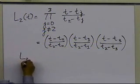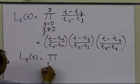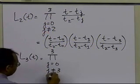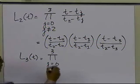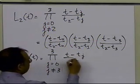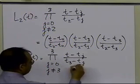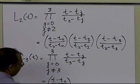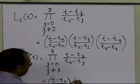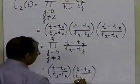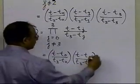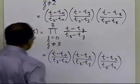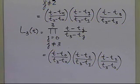L3(t) equals the product from j=0 to 3 with j ≠ 3 of (t − t_j)/(t3 − t_j). Expanding: [(t − t0)/(t3 − t0)] · [(t − t1)/(t3 − t1)] · [(t − t2)/(t3 − t2)]. Those are how the weights for each individual velocity will be calculated.